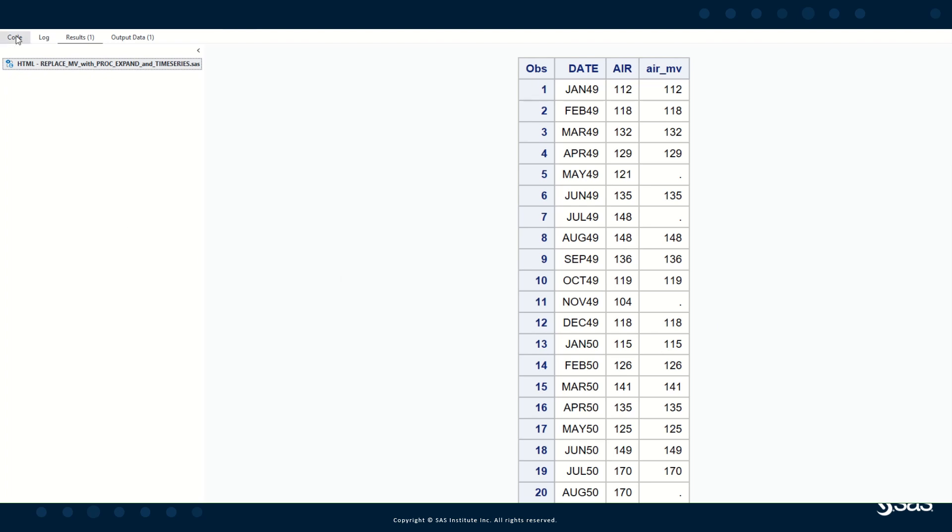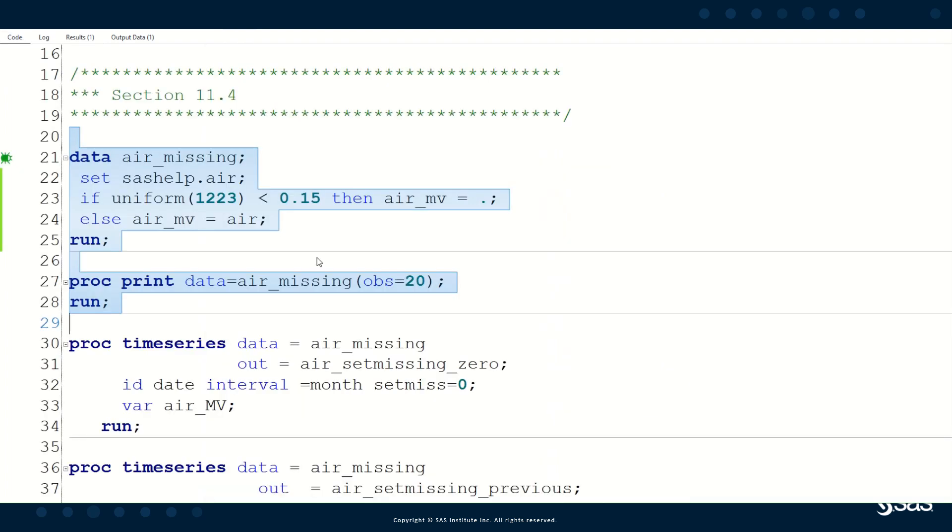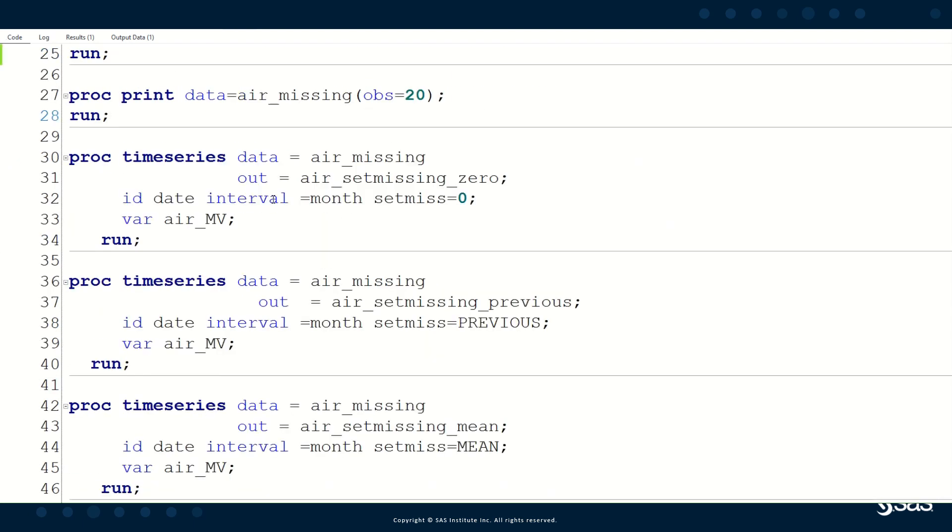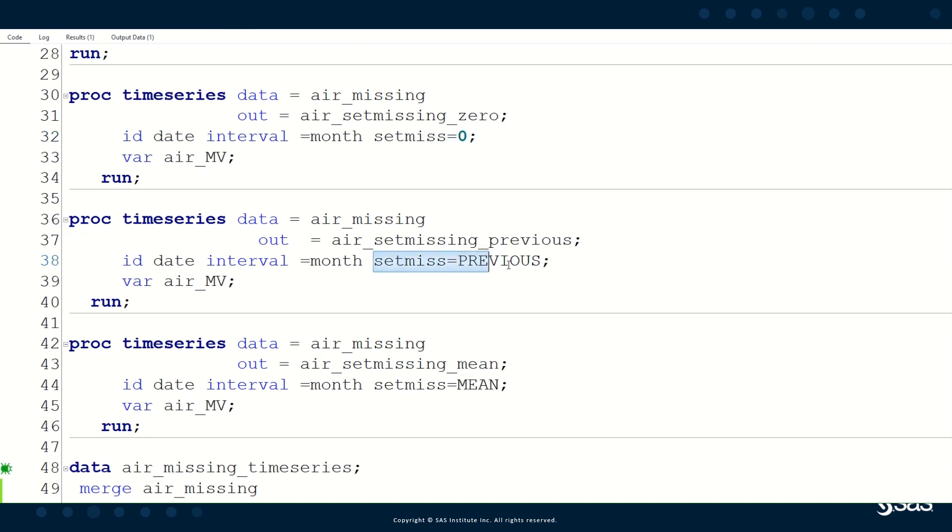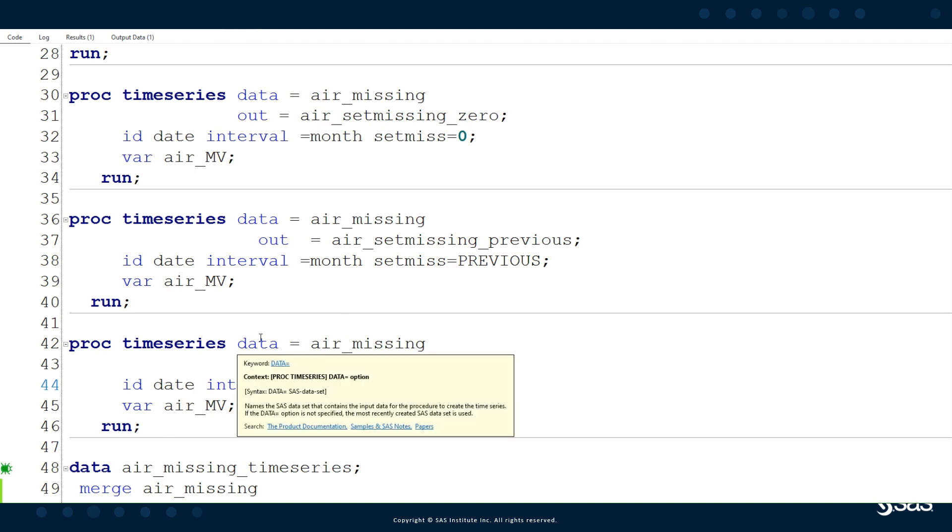I can now use again the PROC TIMESERIES procedure to impute these missing values with certain values. So for example, I can use PROC TIMESERIES to set the missing values to zero as I did previously or to insert the previous value from the last available time period or I can set the overall mean which I have for this spike group as the average of all observations. So you see, this is a sample of possibilities which PROC TIMESERIES allows you to do.